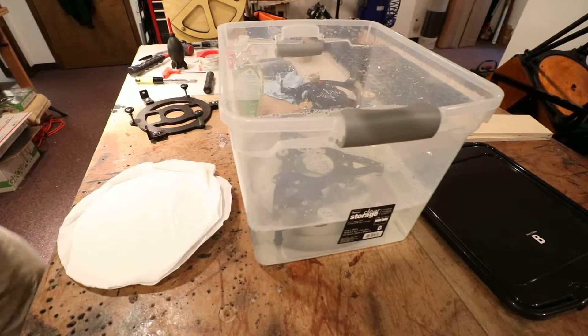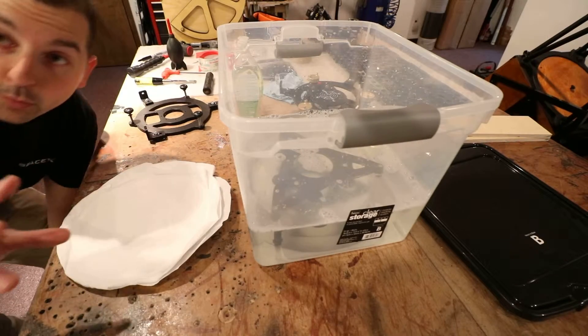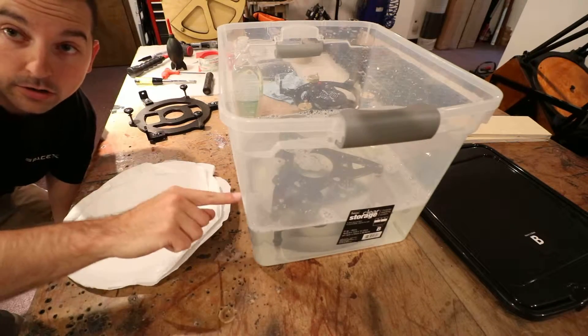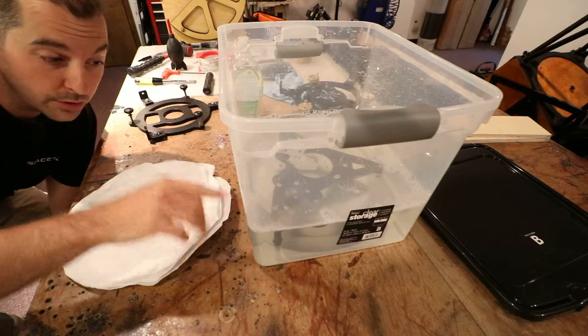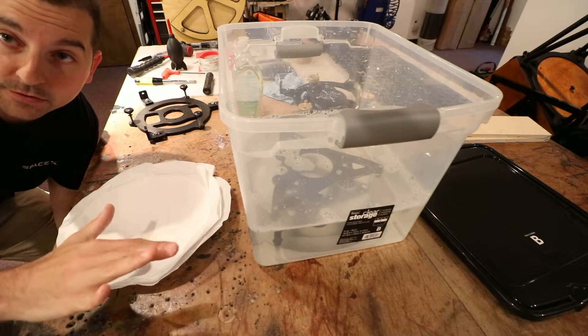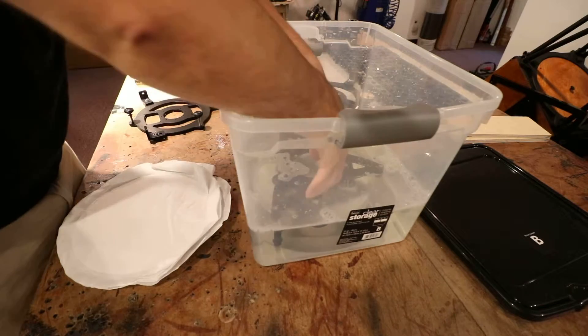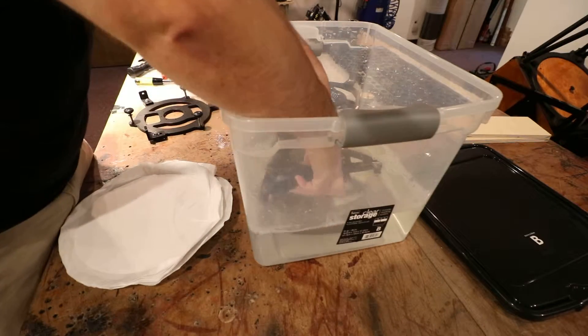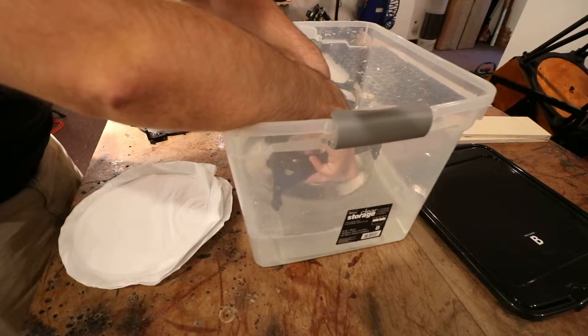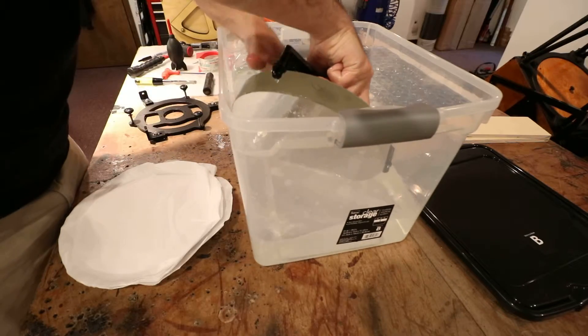Alright, so what you're going to do is you're going to leave that mirror in the water, totally submerged with the cell, 10, 15, 20 minutes, just let it sit and soak. It could either be face down, it's easier that way, as long as you make sure that the tub doesn't have any grit in there, you don't want to damage the face of the mirror.